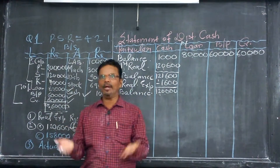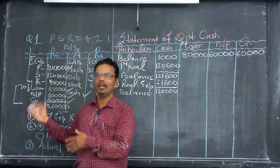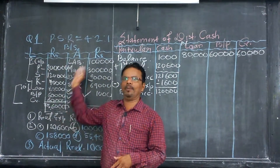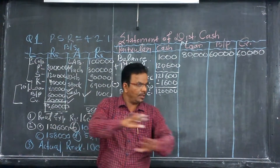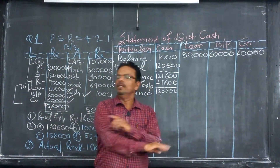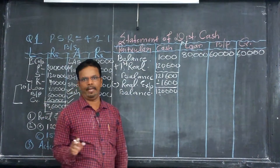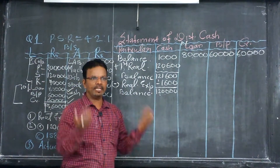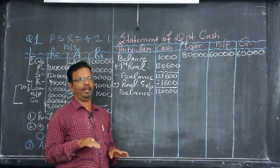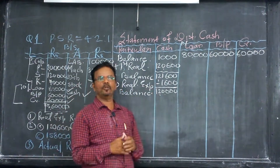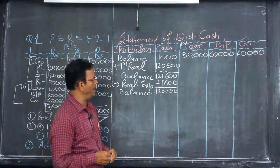First step is to pay realization expenses. Second, we have to pay government dues and government tax. But in this case, government dues and government tax are not given, so there is no need to pay. What is given, that we have to pay; what is not given, there is no need to pay.